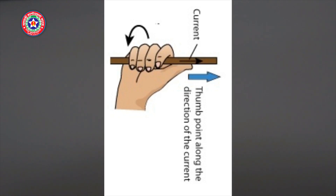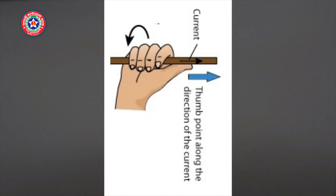Now, rules for determining the direction of magnetic field. We can determine the direction of magnetic field by using Fleming's right-hand thumb rule. Imagine the conductor to be held in your right hand with the fingers curved around it. If the thumb points in the direction of the current, then the curved fingers show the direction of the magnetic field.